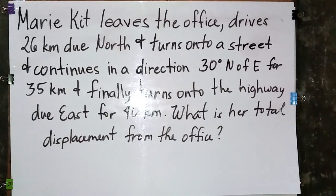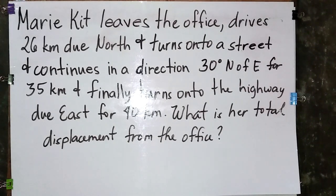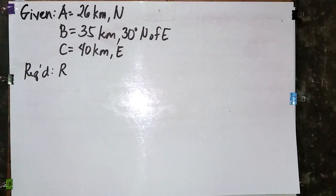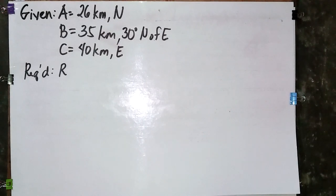Let's apply our component method through this problem. Mary Kit leaves the office and drives 26 kilometers due north, then turns and continues in a direction 30 degrees north of east for 35 kilometers, and finally turns onto the highway due east for 40 kilometers. What is her total displacement from the office? Given: Vector A is 26 kilometers north, Vector B is 35 kilometers 30 degrees north of east, and Vector C is 40 kilometers east.